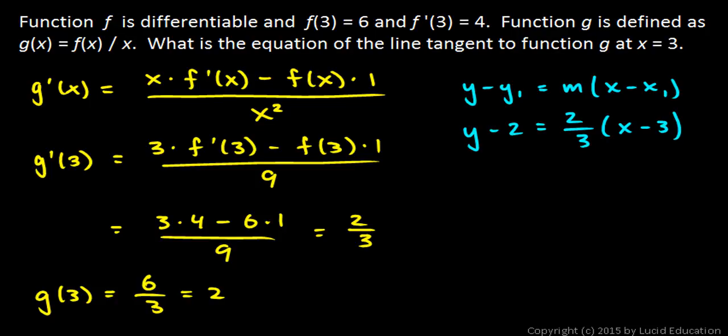And that's it. That's your answer. You could distribute the 2/3 if you needed to and get it into slope-intercept form if you needed to, but you don't have to. This is fine. This is the equation of the line tangent to function g at x = 3 written in point-slope form.